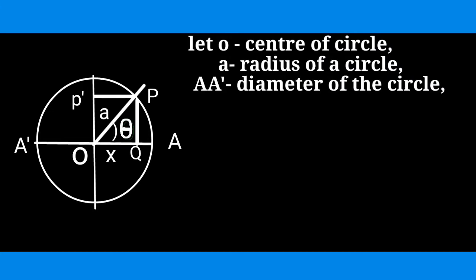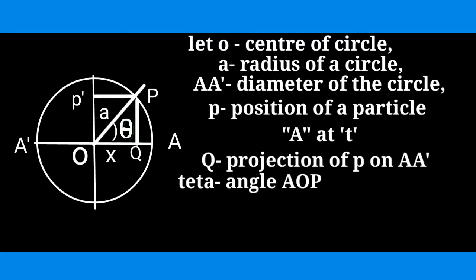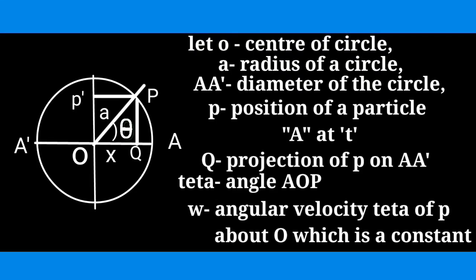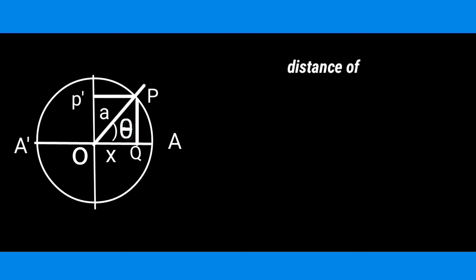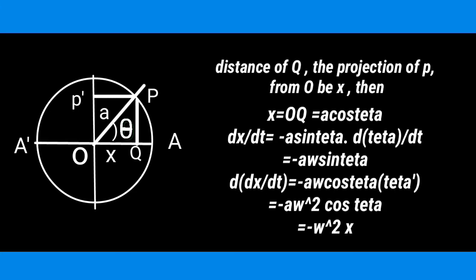We know that O is the center of the circle, A is the radius, and AA' is the diameter. P is the position of the particle at time T, Q is the projection of P on AA', theta is the angle AOP, and omega is the angular velocity. The displacement is X equal to OQ, which equals A cos theta.